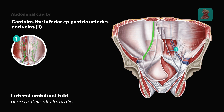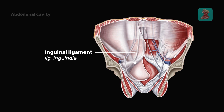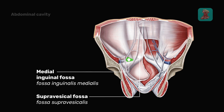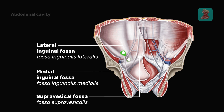On the internal surface of the anterior abdominal wall, above the inguinal ligament, three pairs of fossae are present between the above-mentioned folds: two supravesical fossae, which are located on the sides of the medial umbilical fold; the medial inguinal fossa, which is located medially to the lateral umbilical fold and corresponds to the external opening of the inguinal canal; and the lateral inguinal fossa, which is located laterally to the lateral umbilical fold and corresponds to the internal opening of the inguinal canal. Under the inguinal ligament, there is another fossa called the femoral fossa, which corresponds to the internal opening of the femoral canal.